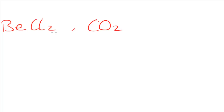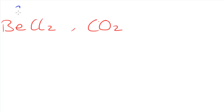The first two examples are BeCl₂ and CO₂. The first thing you might notice is that both of these central atoms have only two other atoms bonded to it. These particular ones we could class as having two bonded pairs and no lone pairs.